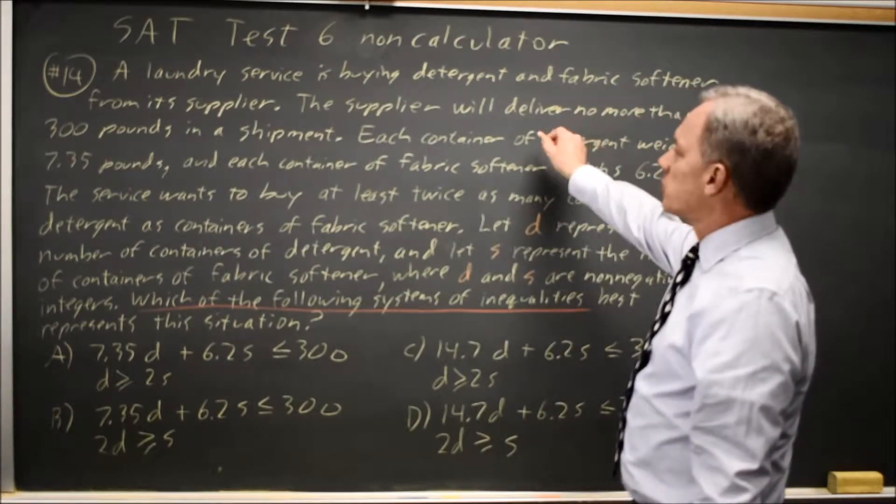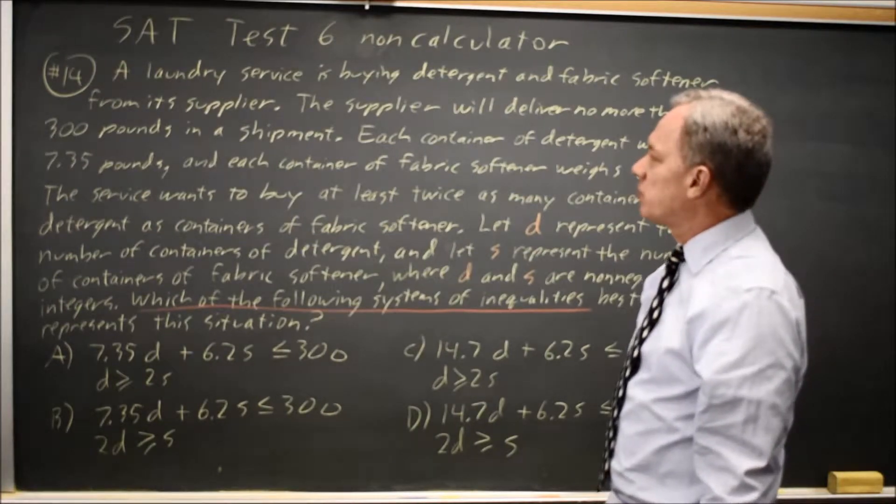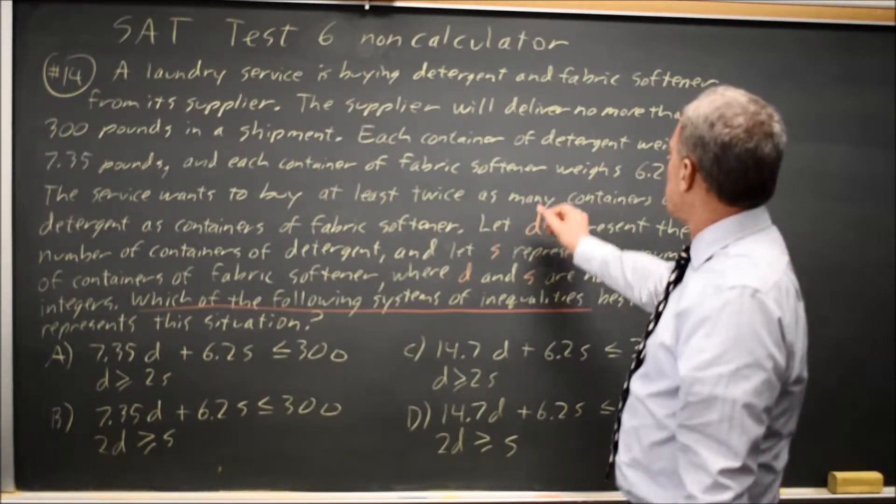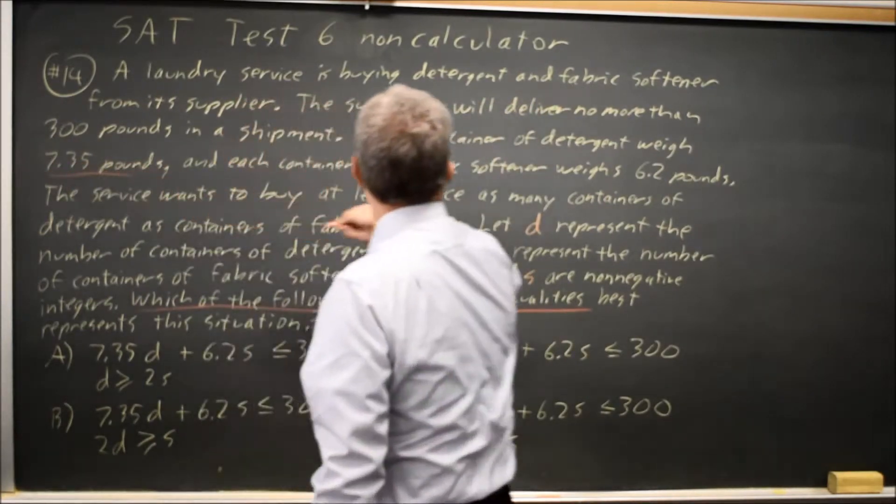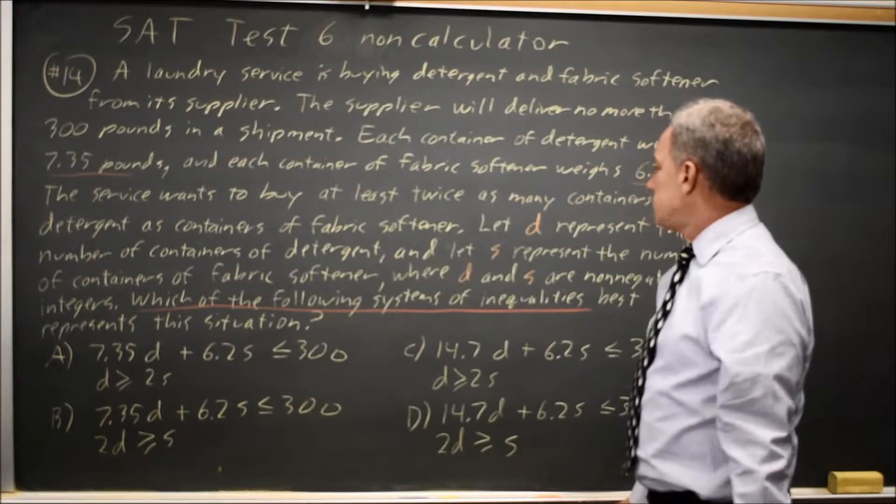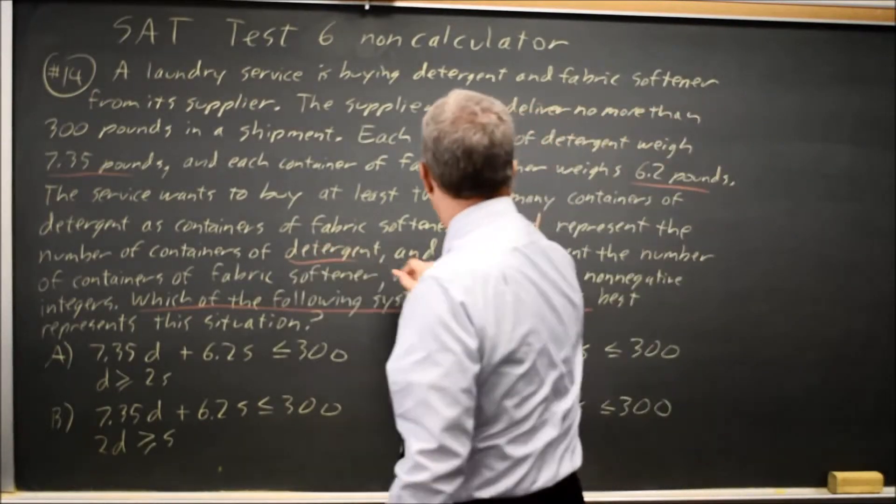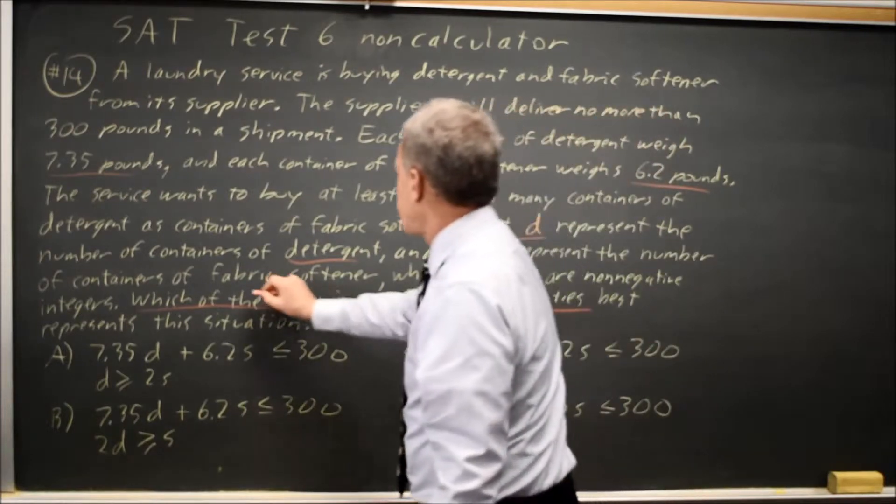Supplier will deliver no more than 300 pounds in a shipment. Detergent weighs 7.35 pounds per container. Fabric softener weighs 6.2 pounds per container, where D is the number of containers of detergent and S is the number of containers of fabric softener.